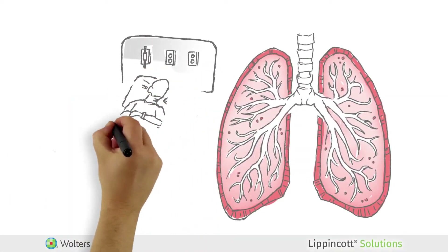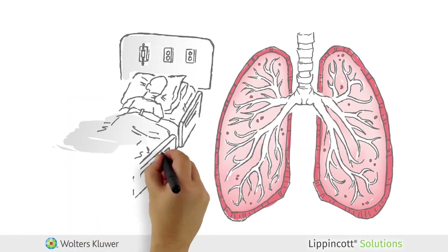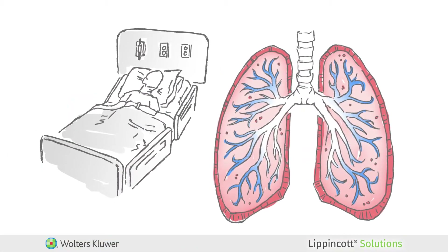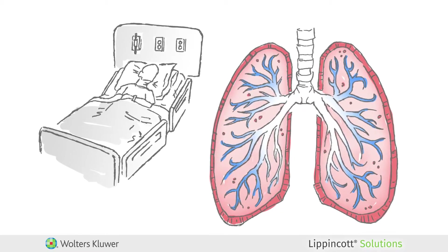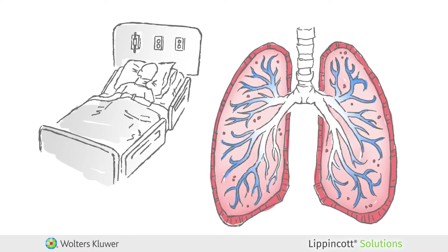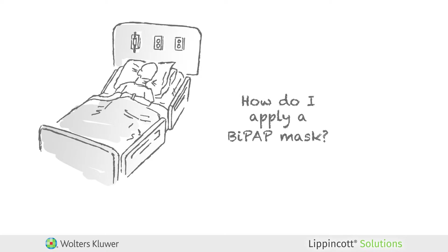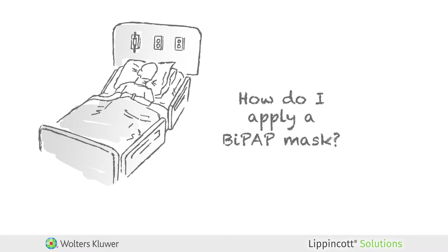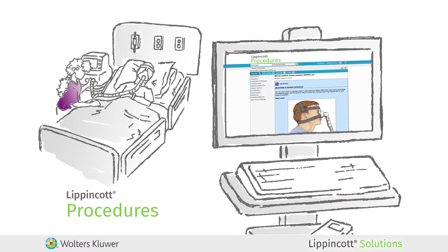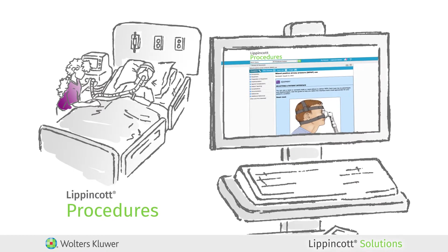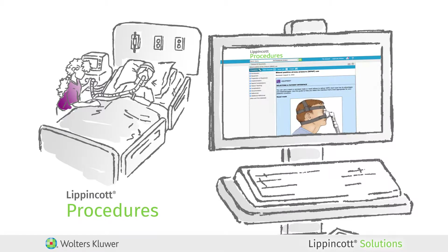With a patient in pulmonary edema and respiratory distress, a BiPAP, a furosemide IV bolus, and a STAT chest X-ray are ordered. What are the proper steps for applying a BiPAP mask? Review the step-by-step instructions for applying a BiPAP mask in Lippincott Procedures at the point of care before sending your patient to the ICU.